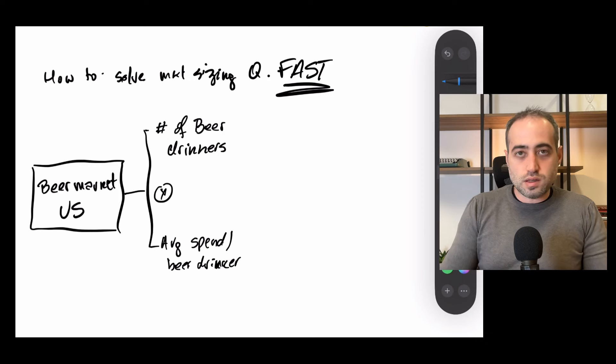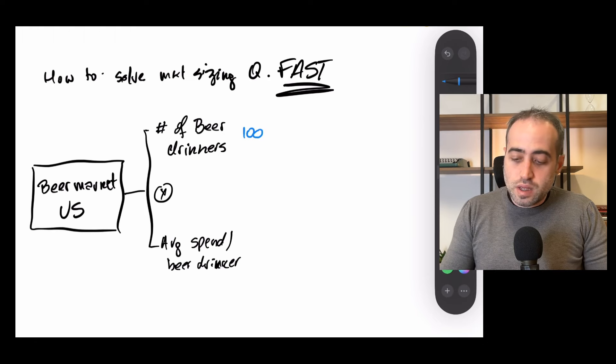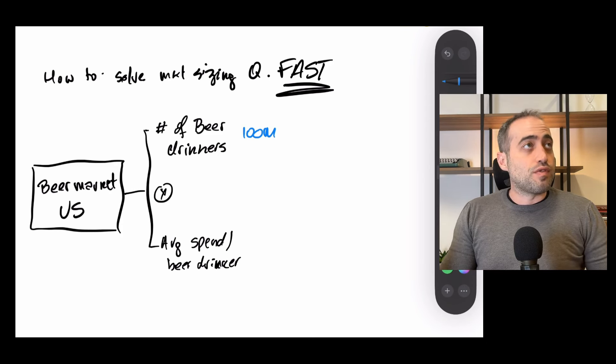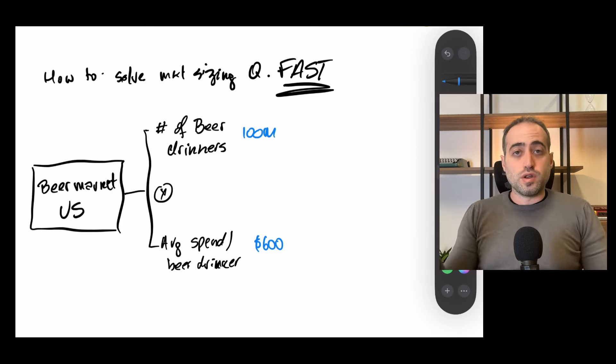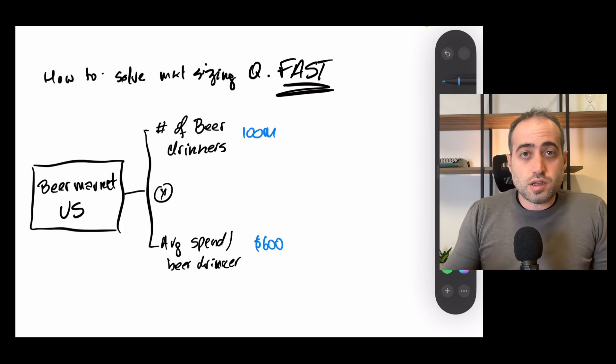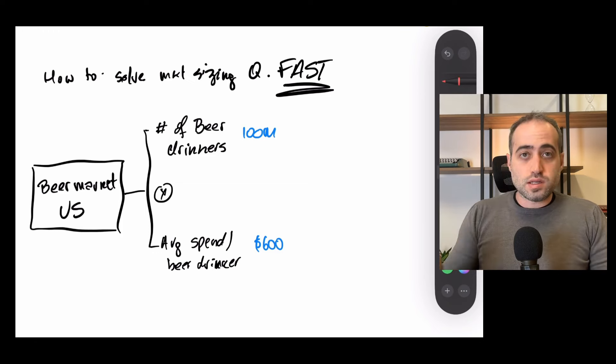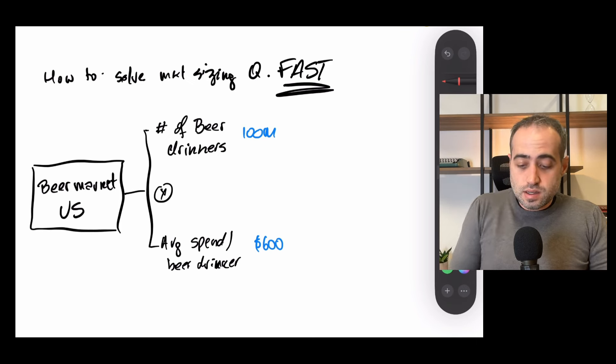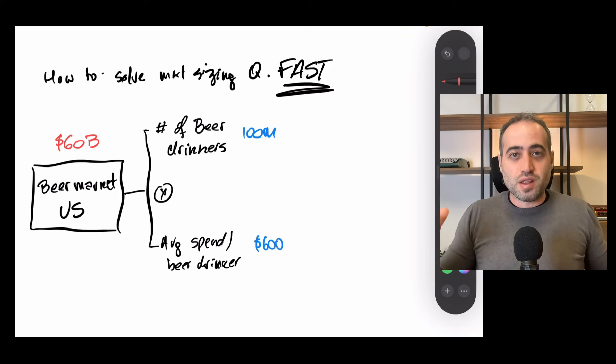So how do I solve this in 30 seconds? Well, I took like 20 seconds to write this down. And then I'm gonna say, let's say that there are 100 million beer drinkers in the US. And let's say that each of them spends like $50 per month. So $600 per year. How do I know these numbers? I don't, right? And I'll get to that. So in this case, what would the answer be? Well, 100 million times 100 is 10 billion times six, that's $60 billion.